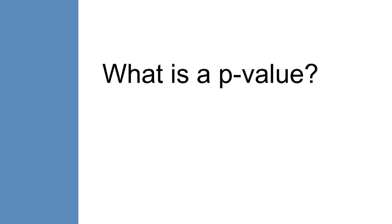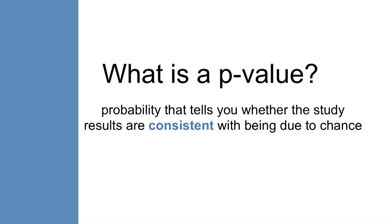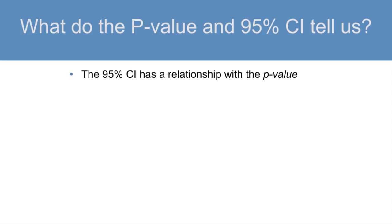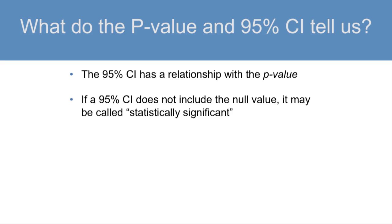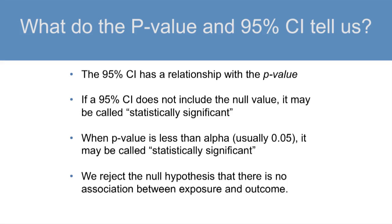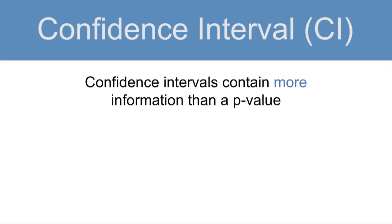So, what is a p-value? Study results are a combination of real effects and chance. The p-value is a probability that tells you whether the study results are consistent with being due to chance. The p-value does not tell you if the study result was due to chance. P-values alone do not let us directly say anything about the direction or size of a difference or measure of association between different groups. The 95% confidence interval has a relationship with the p-value. If the 95% confidence interval does not include the null value, it is called statistically significant. When a p-value is less than alpha — usually chosen as 0.05 — it may be called statistically significant, meaning you can reject the null hypothesis that there's no association between the exposure and the health outcome.